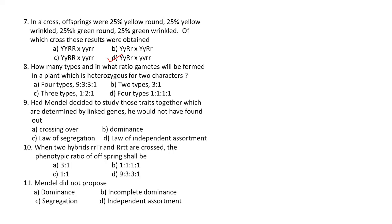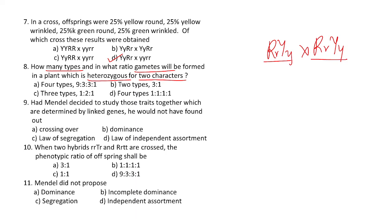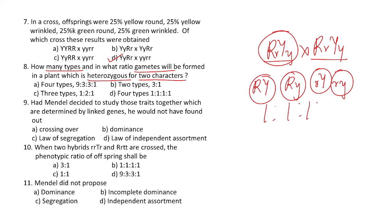Question 53: how many types and in what ratio will gametes be formed in a plant heterozygous for 2 characters? A dihybrid individual — capital RrYy — produces 4 types of gametes: capital RY, capital Ry, small rY, and small ry. These are produced in the ratio 1:1:1:1.